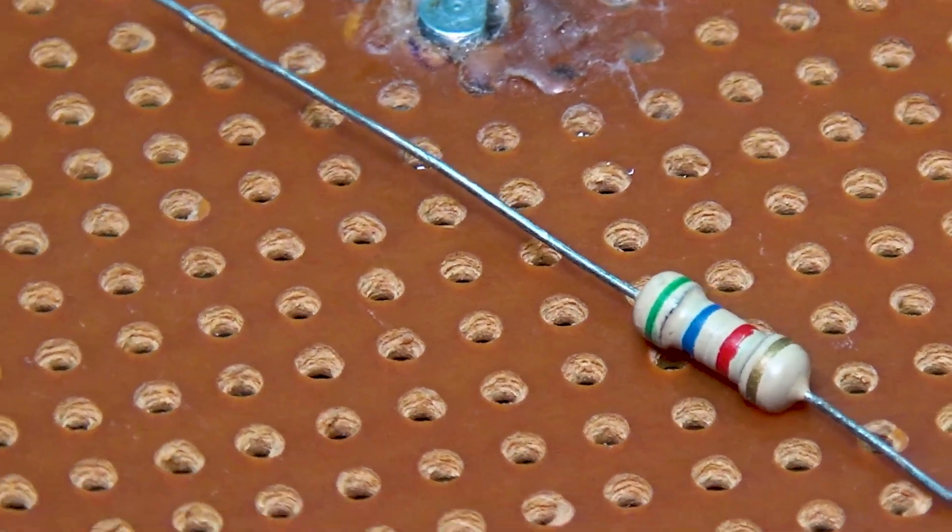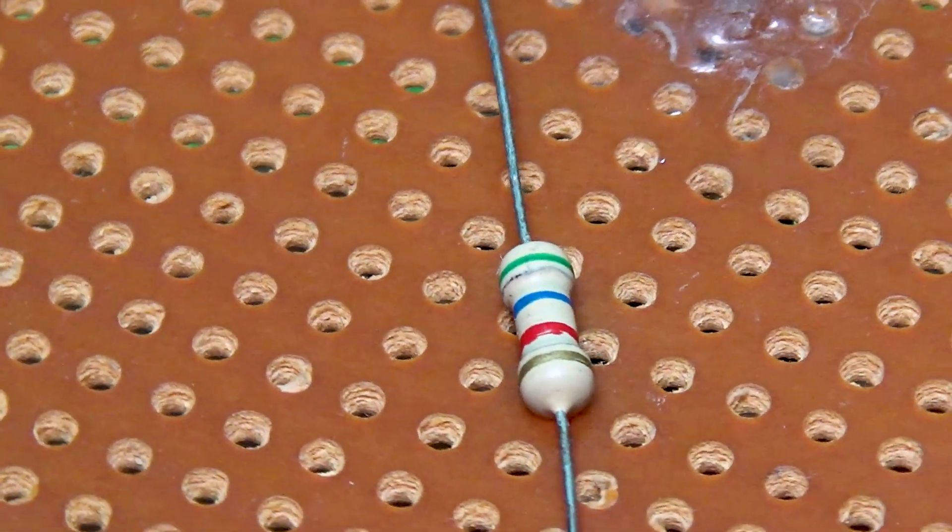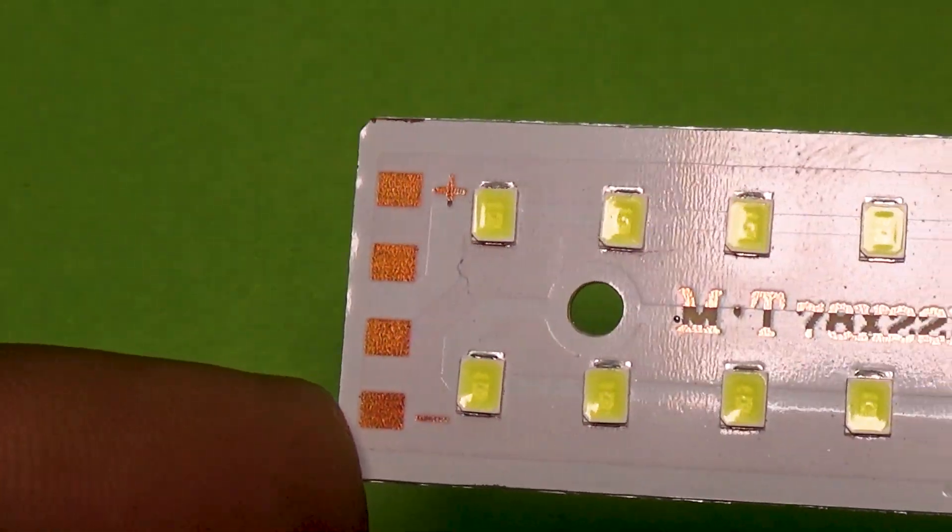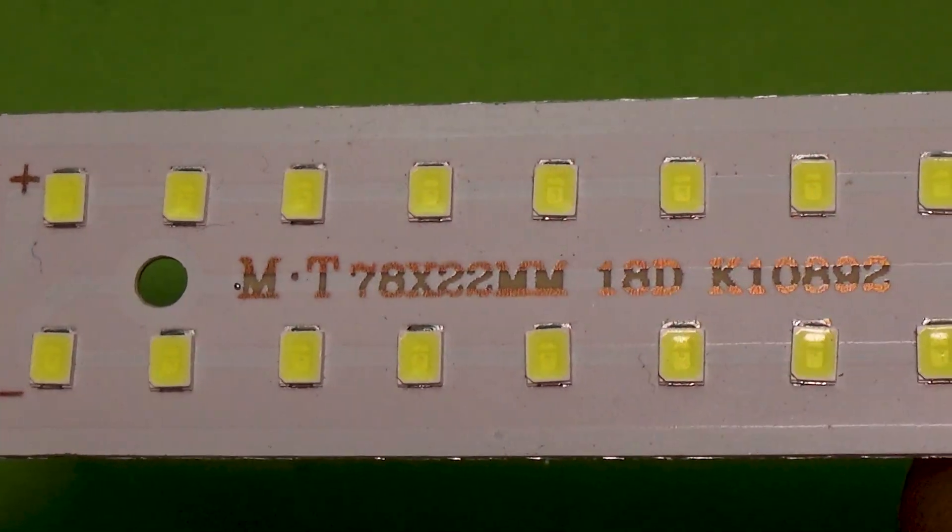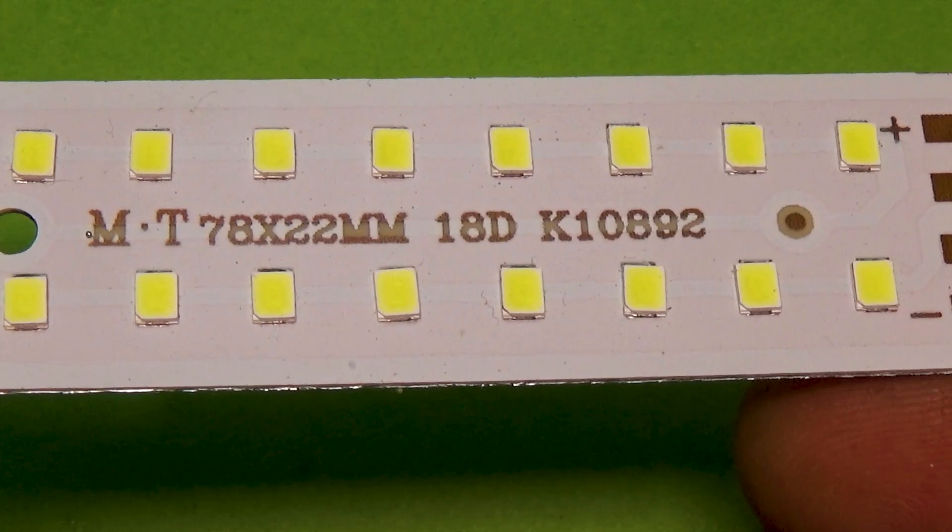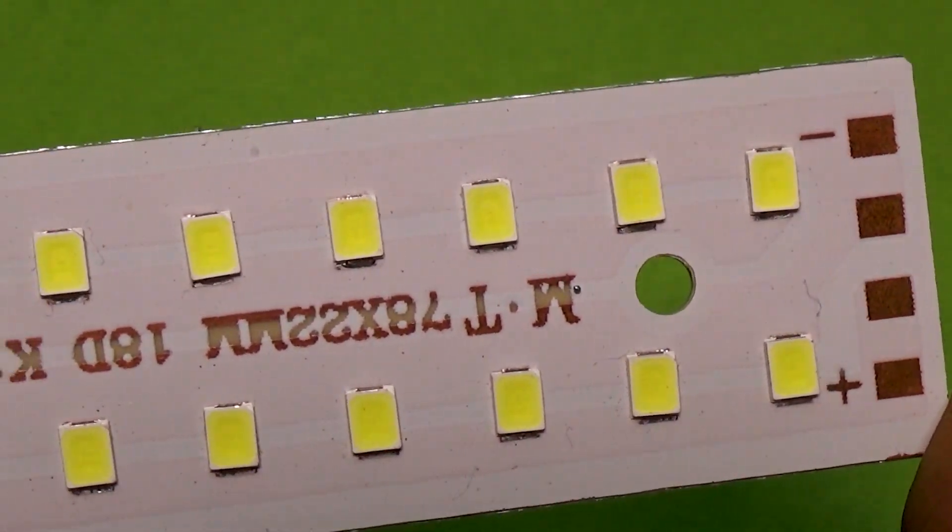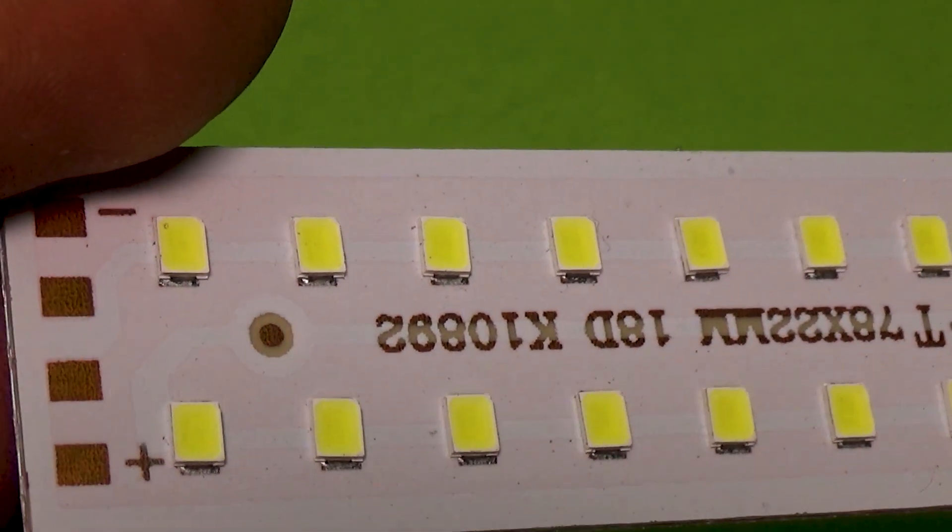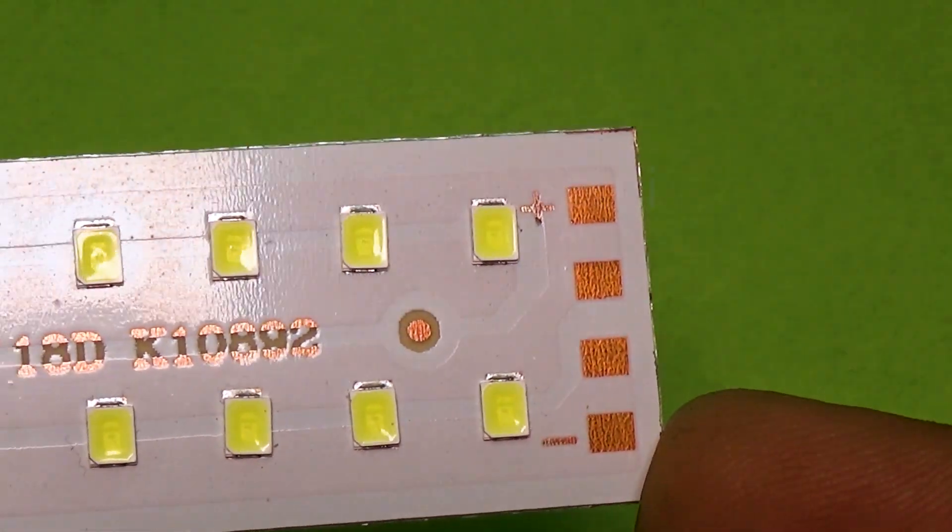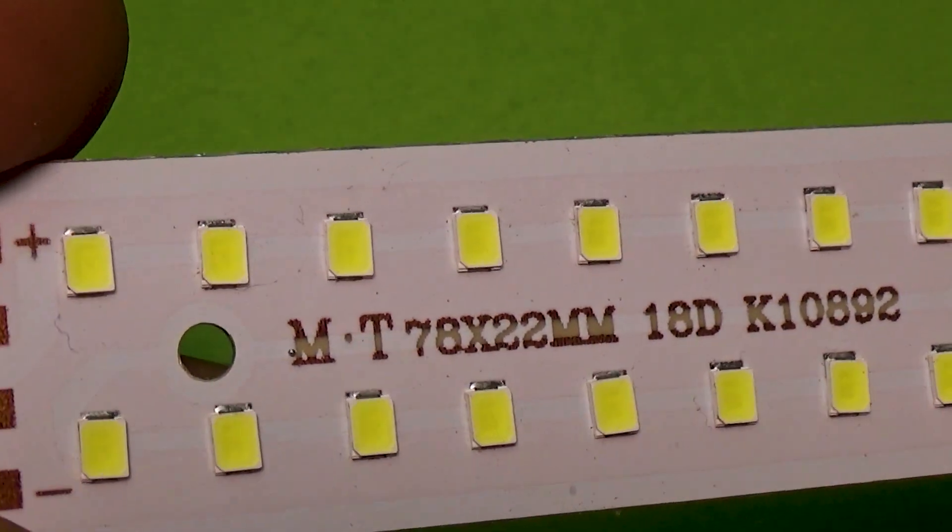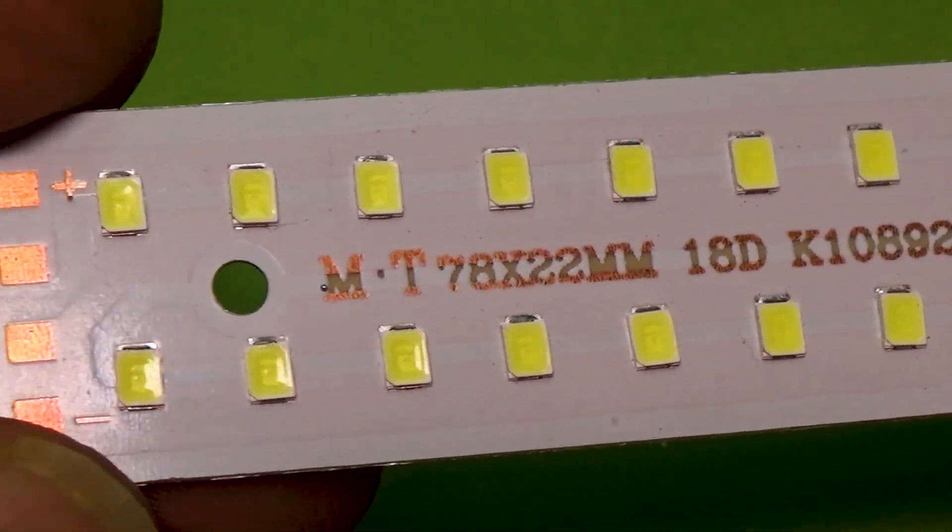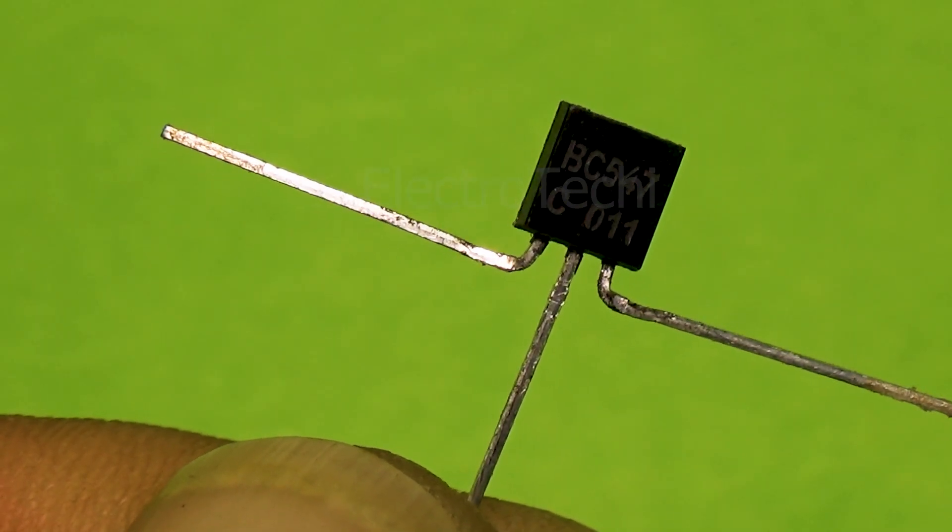This resistor forms a voltage divider with the LDR, creating a variable voltage for the transistor's base. This is our output indicator. It lights up automatically when darkness is detected. Power supply. You can use a 5V to 12V battery or power supply to power the circuit. But remember, if you are using a 4V LED strip, then give the circuit a maximum of 6V of supply or battery. And if you are using a 12V LED strip, then you can also connect it to a 12V to 14V supply or battery.